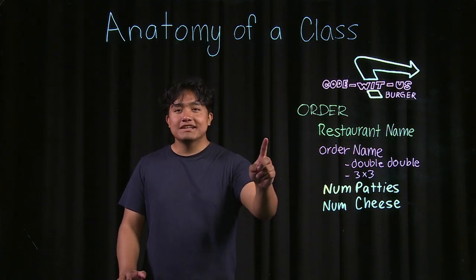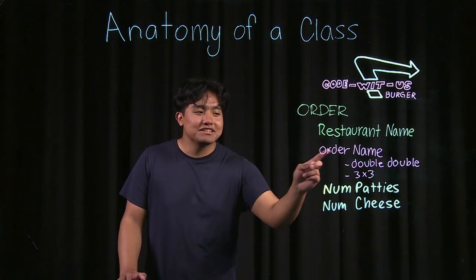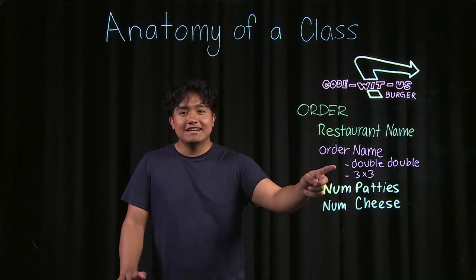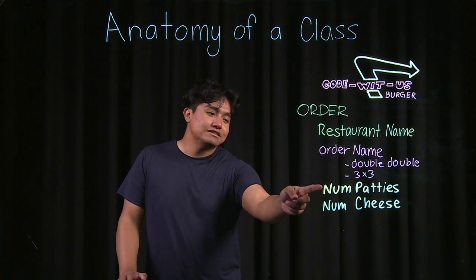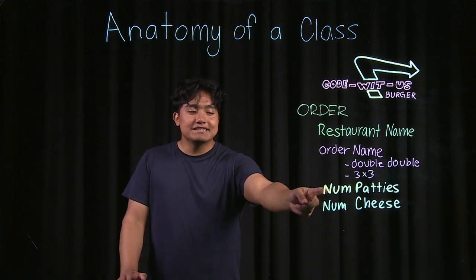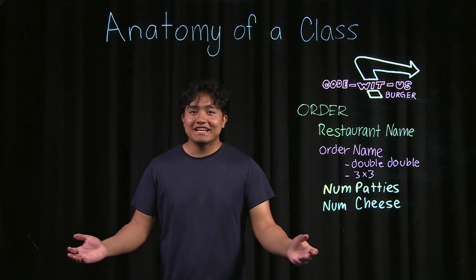Then the order name, which we're going to give two options for our menu items: double double and a 3x3. Depending on which one they order, it'll give us the two patties and two cheeses or three patties and three cheeses. So let's code that up.